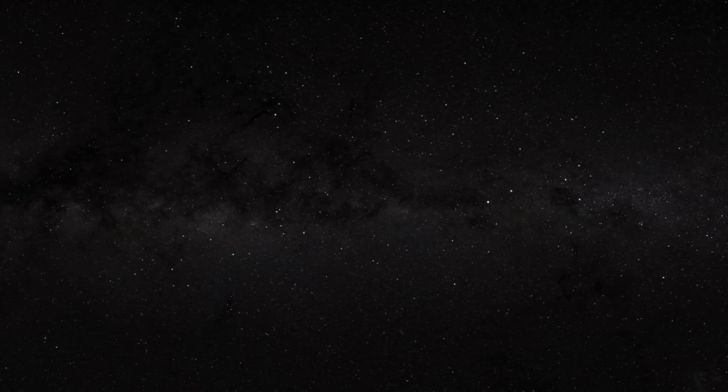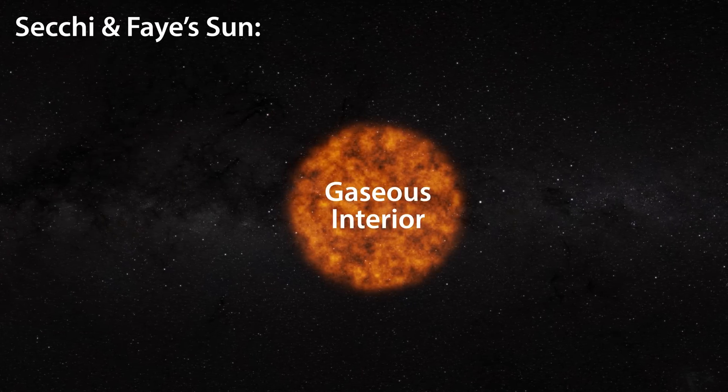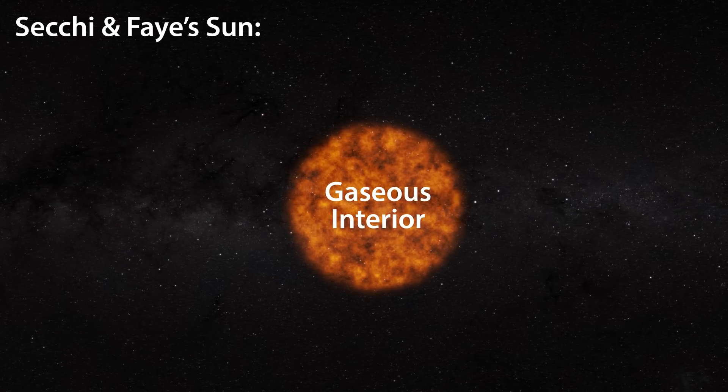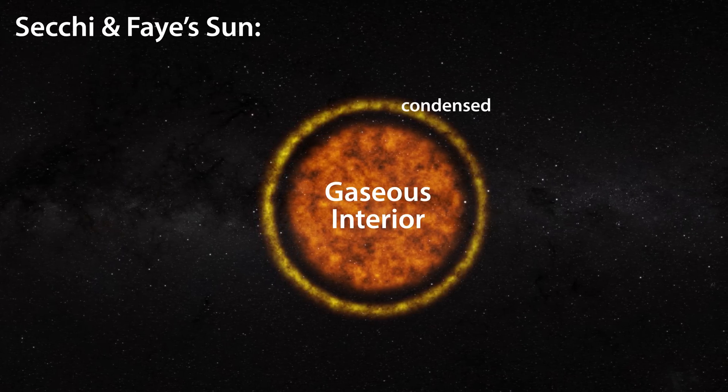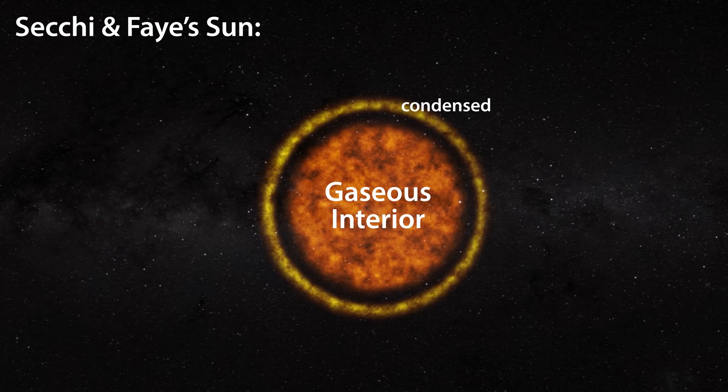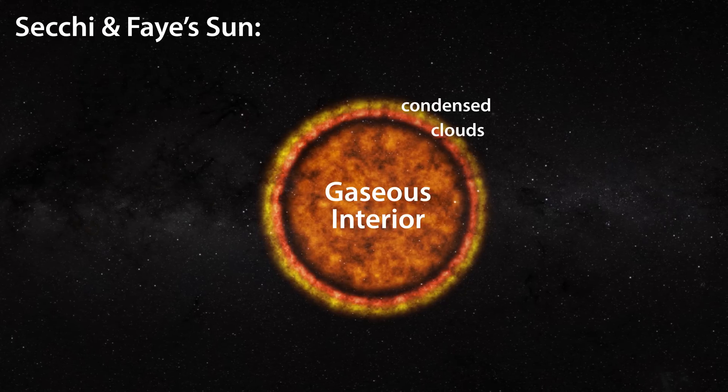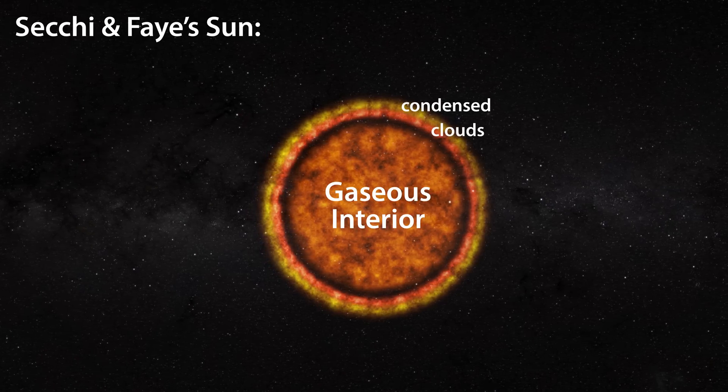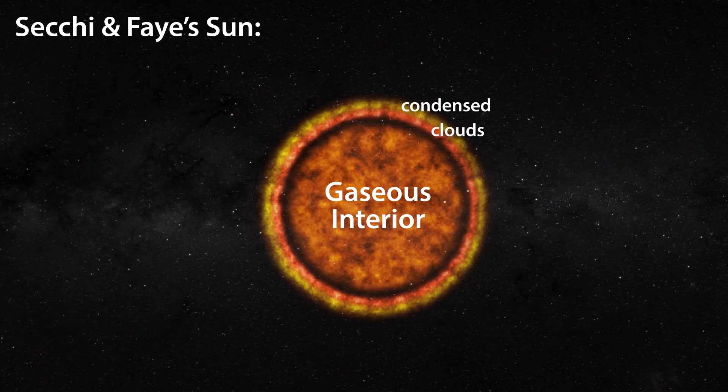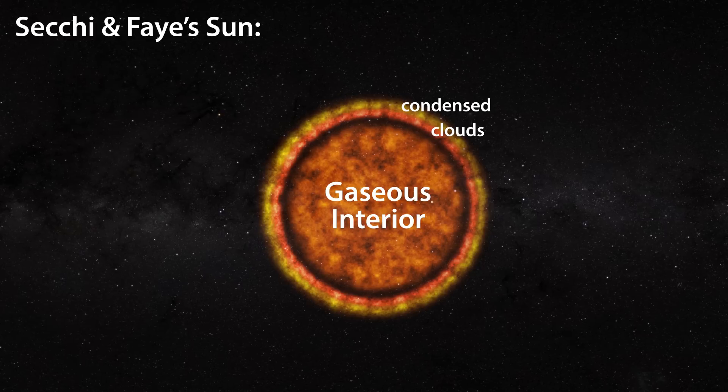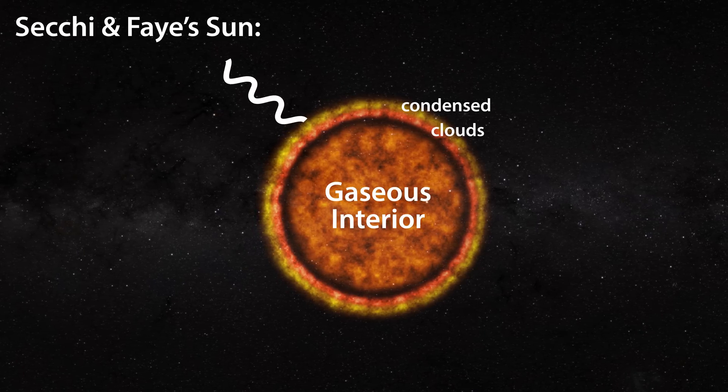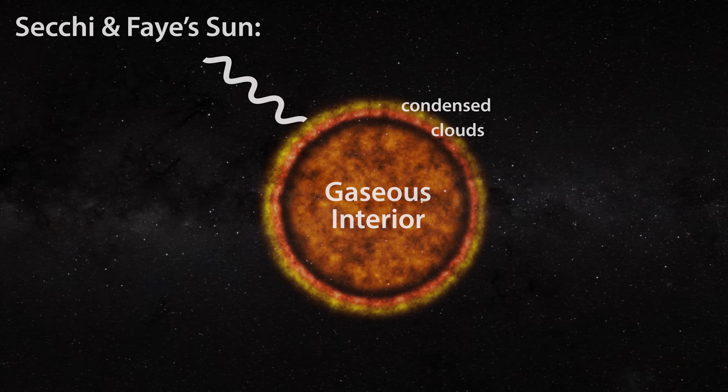They viewed the sun much like Spencer, but rather than adopt a condensed solar surface, they thought of the photosphere as being composed of clumps of solid or liquid matter, which floated on top of inferior solar clouds. So we have to ask, why did Seci and Fay want to have condensed matter floating on top of clouds? The answer was because they believed that the white light emitted by our solar surface could only be produced by condensed matter.